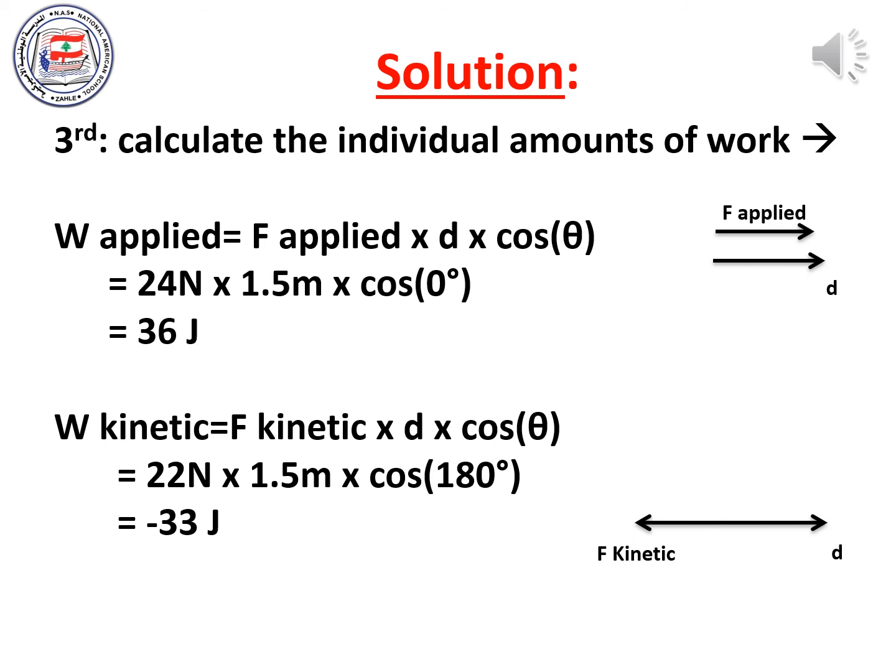Finally, calculate the work done by the force of kinetic friction by multiplying its magnitude by the displacement times cosine of the angle. The force of kinetic friction opposes motion so it is backwards, while displacement is forwards, making the angle 180 degrees. So: 22 N × 1.5 m × cos(180°) = −33 joules. As you can see in this example, we got work equal to zero, work that is positive, and work that is negative.